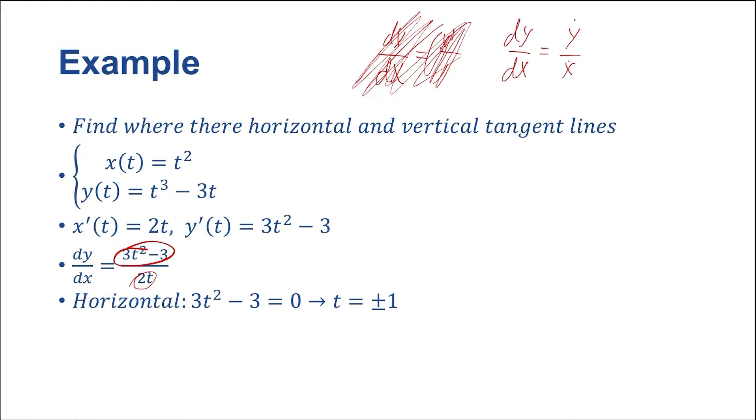We get 3t squared minus 3 equals zero. We can solve for this and we get t is equal to plus or minus 1. So we know that whenever t is equal to plus or minus 1, t equals 1 and t equals minus 1, we have a horizontal tangent line.